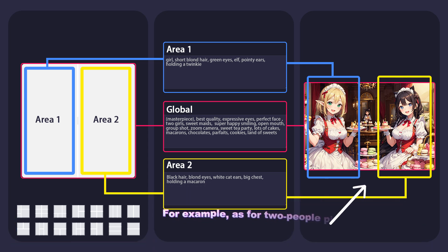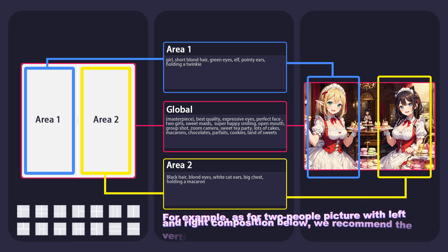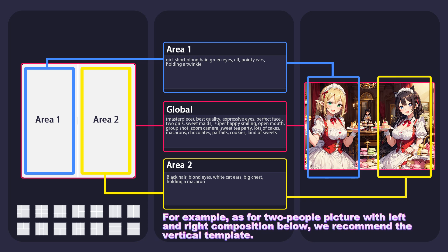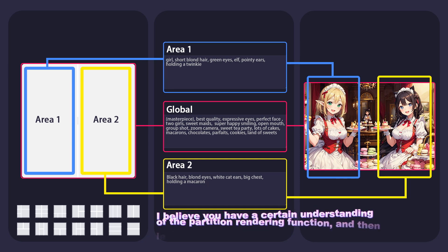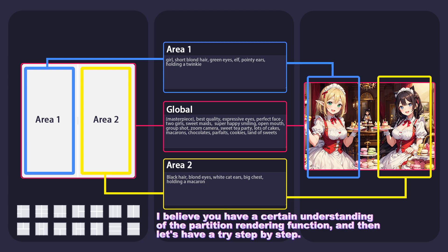For example, for a two-person picture with left and right composition, we recommend the vertical template. I believe you now have a certain understanding of the partition rendering function, so let's have a try step by step.